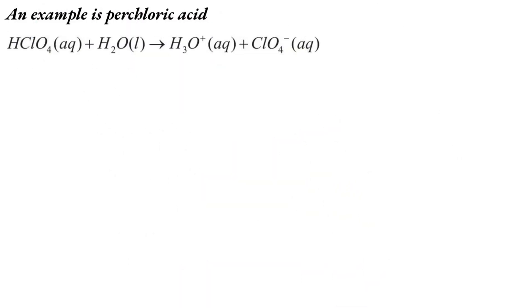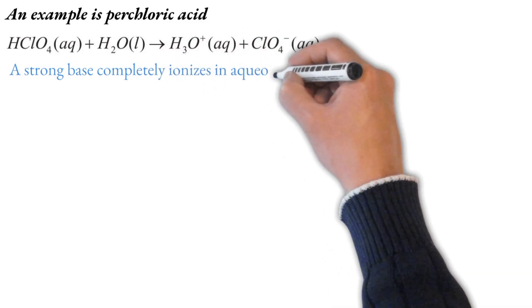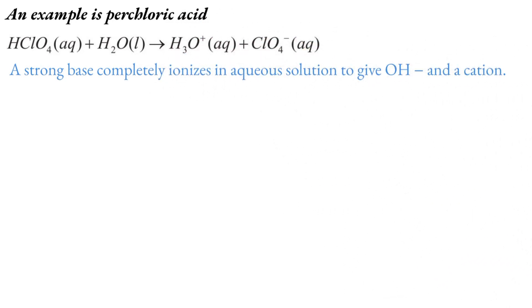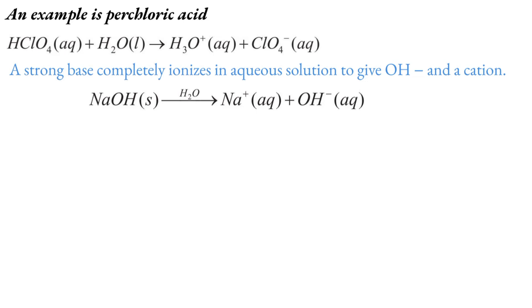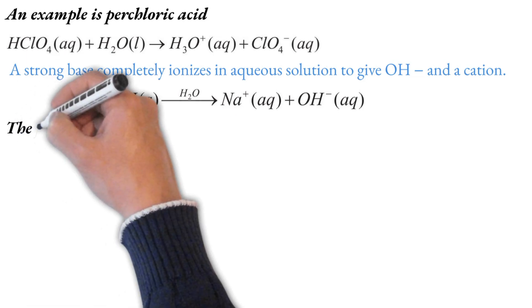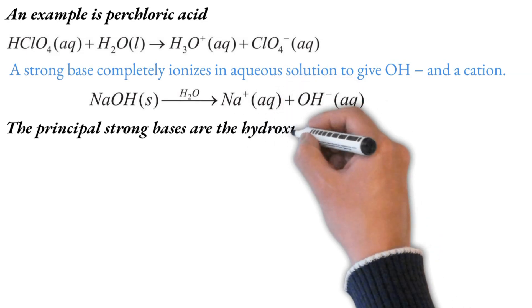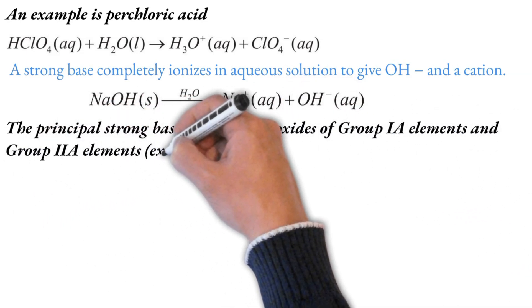For example, hydrochloric acid completely ionizes to give hydronium ion and anion. A strong base is a substance that completely ionizes in aqueous solution to give hydroxide ion and a cation. For example, sodium hydroxide is a strong base. The principal strong bases are hydroxides of Group 1 and Group 2 elements.